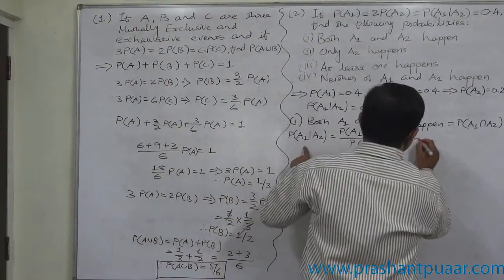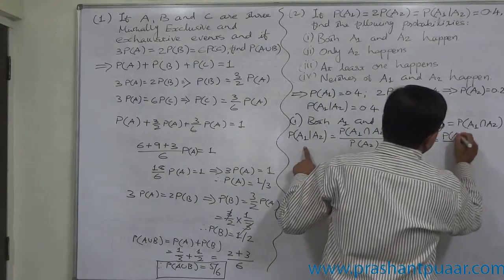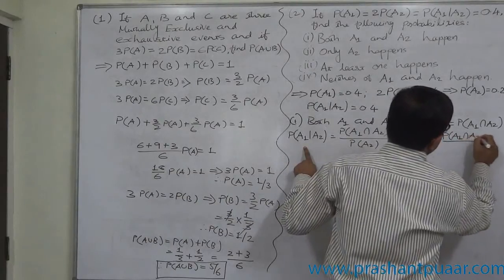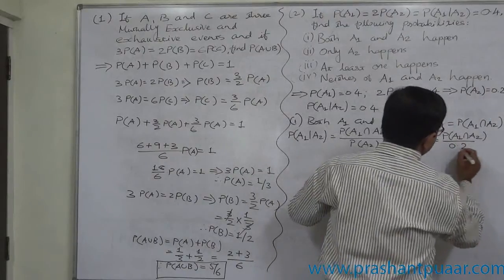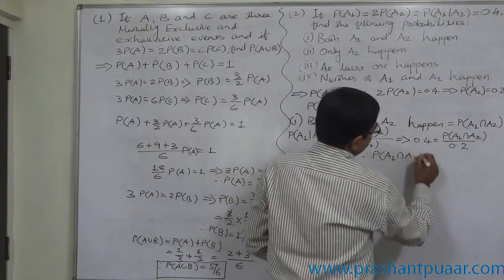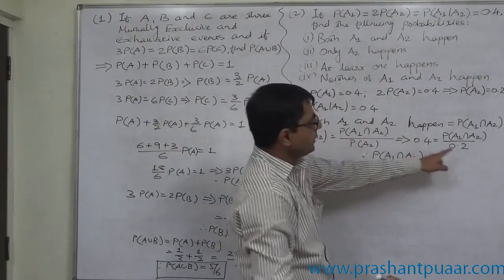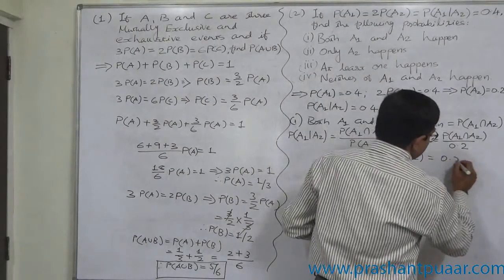0.4 equals to P of A1 intersection A2 divided by 0.2. That means 0.4 into 0.2. So P of A1 intersection A2 comes to 0.4 into 0.2, that means 0.08.